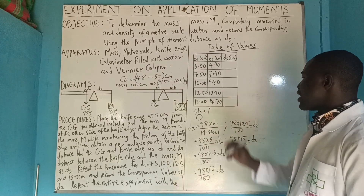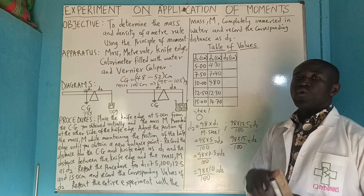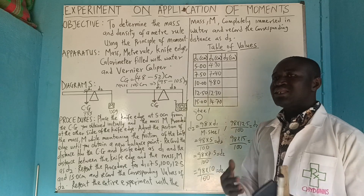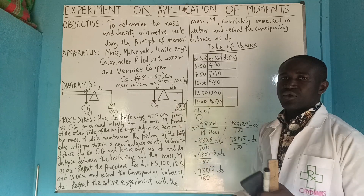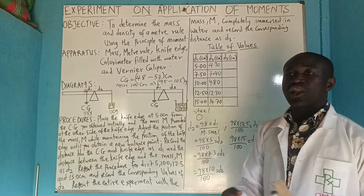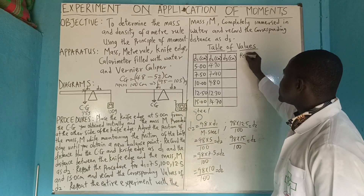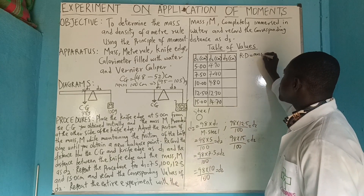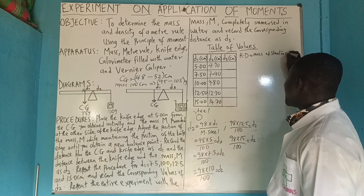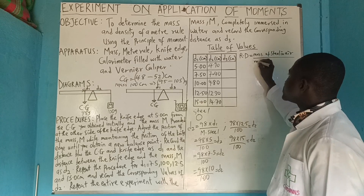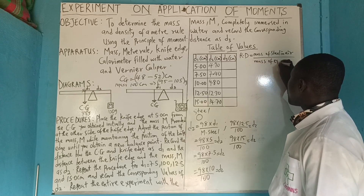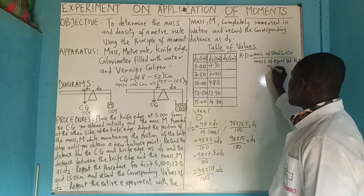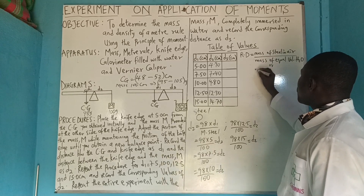How do we get D3? D3 involves immersing that mass in water. There are a lot of things we need to consider: Relative Density, Density of upthrust, and others. First, we check Relative Density. Relative Density of the steel equals mass of steel in air, divided by mass of equal volume of water, or divided by mass of water displaced.